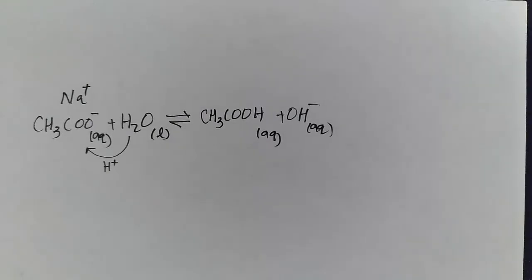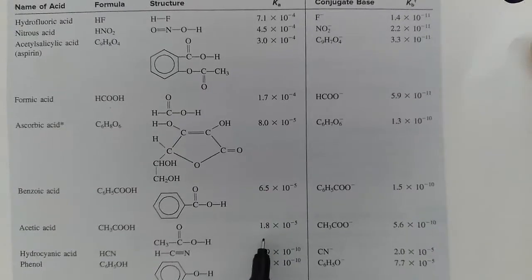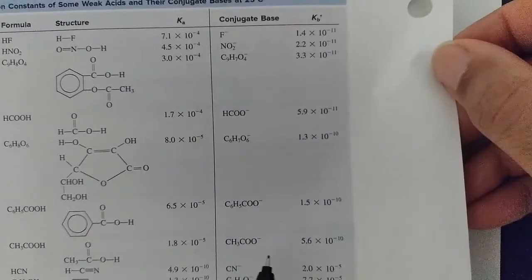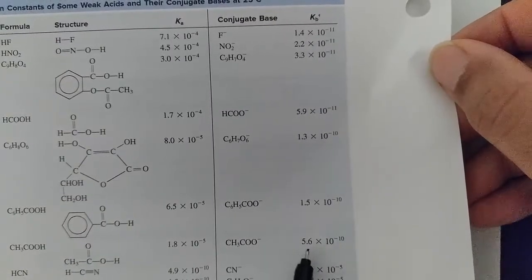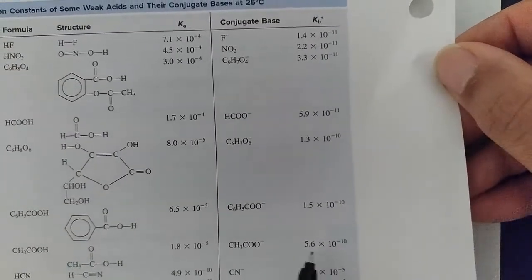1.8 times 10 to the minus 5 is the KA of acetic acid. The KB is 5.6 times 10 to the minus 10.